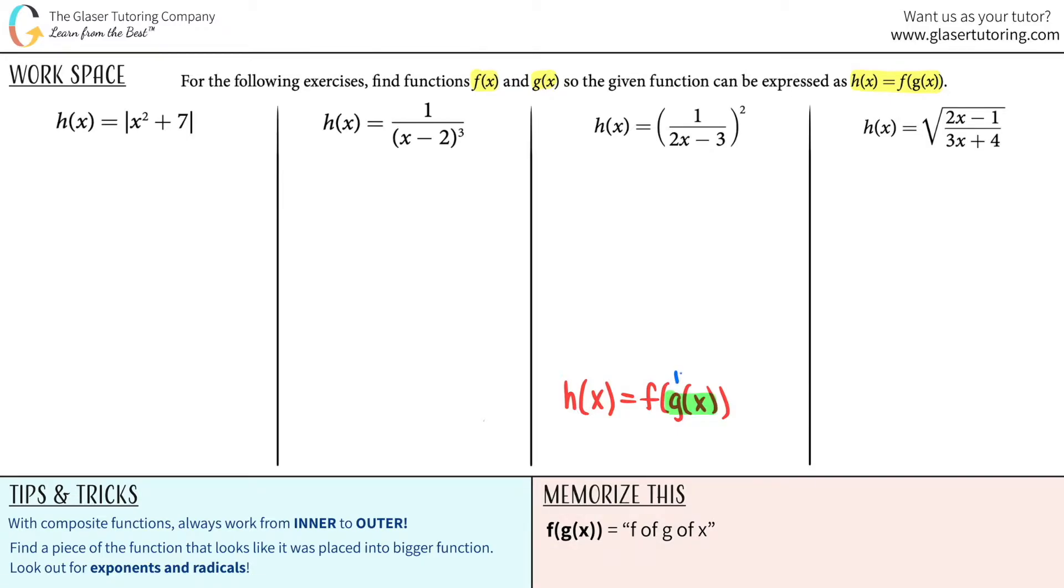That's the inner function, and the f function, since it's more out of the parentheses, it's the outer function. When finding the piece of the puzzle, you're always going to find the inner function first. I think it's just easier that way, and then you will work to find the outer function.